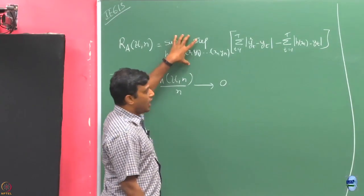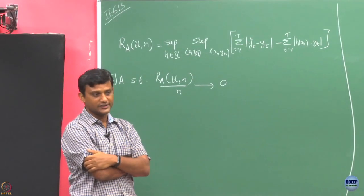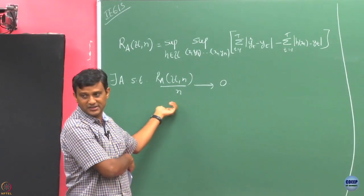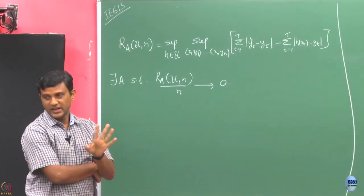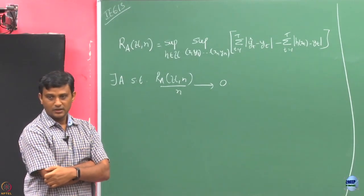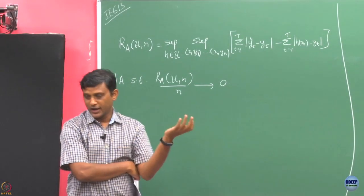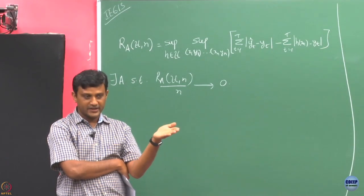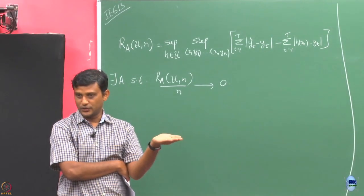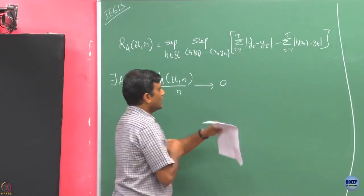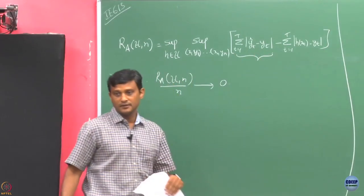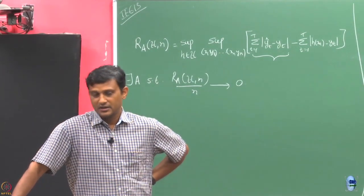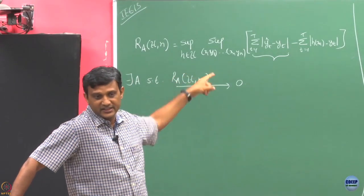Now let's try to understand what kind of bound we can expect from this quantity. Is it possible to achieve this at all? Can I come up with an algorithm which makes my hypothesis class learnable? Now that I have removed the realizability assumption, the power of the adversary is much more. He can look at the label you predicted and then just do the opposite as the true label.